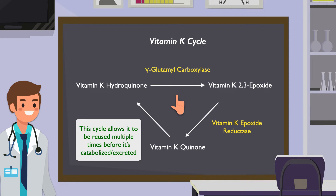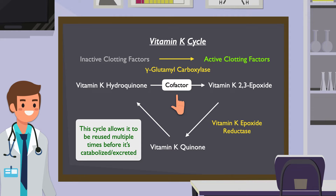Blood clotting comes into the picture in the first step. Here, vitamin K serves as a cofactor in a reaction where gamma-glutamyl carboxylase turns inactive clotting factors into active clotting factors. So gamma-glutamyl carboxylase doesn't just facilitate a change to vitamin K — it uses vitamin K to make sure these clotting factors are functional in the body. Warfarin enters the picture in the second step, inhibiting vitamin K-epoxide reductase, thereby breaking the cycle.